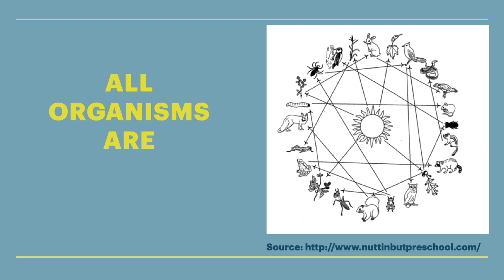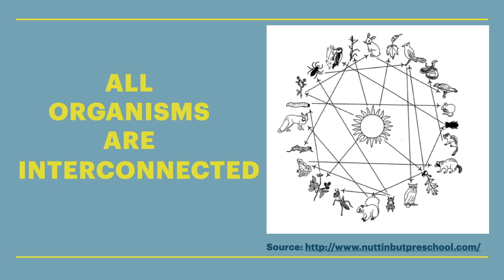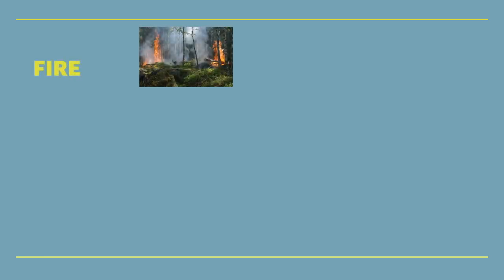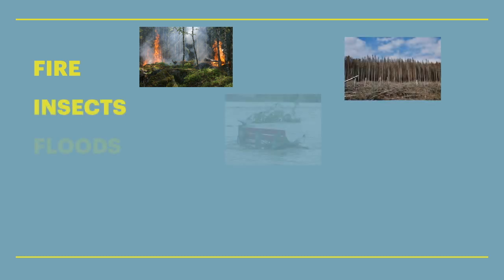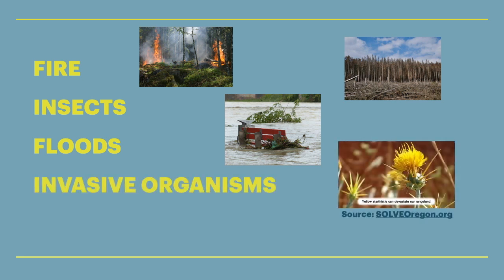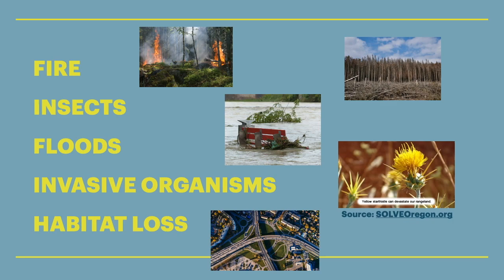All organisms in a habitat are interconnected, and because of that, high biodiversity allows habitats to handle stresses more easily. Like where the interns were working, some of the stresses were things like fire, insects, and flooding. Other stresses include invasive organisms that can take over, and habitat loss due to human activities.